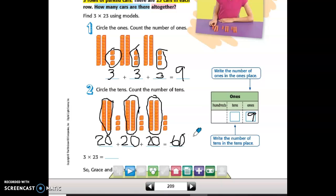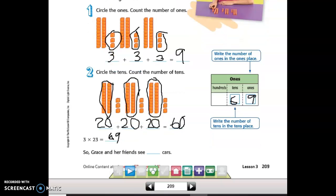So in the tens spot, I'm not going to write 60. I'm going to write six tens. So I just added the 60 plus the nine. 23 times three is 69. So Grace and her friends see 69 cars.